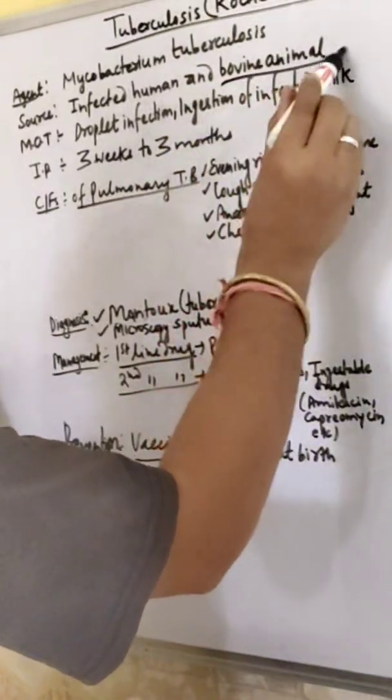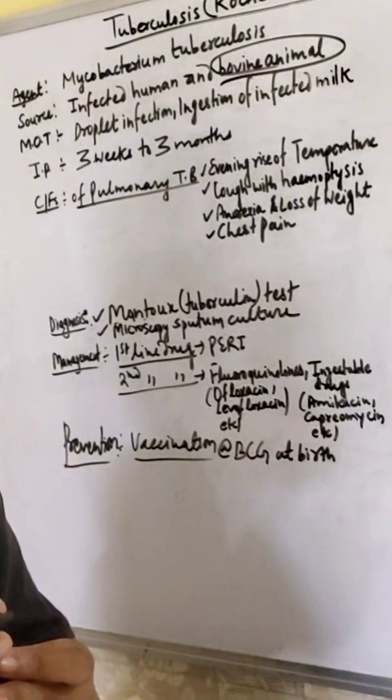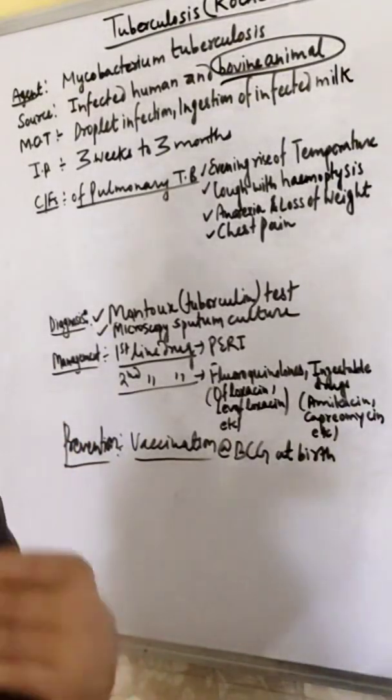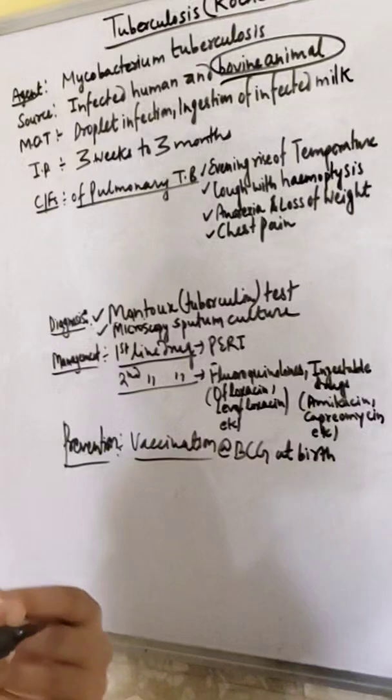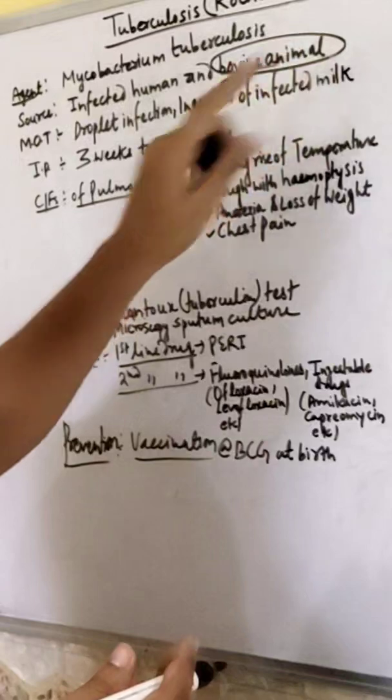Bovine animal, infected animal will cause TB to man. From man, infected man will transfer TB to animals. So we call it bovine TB.